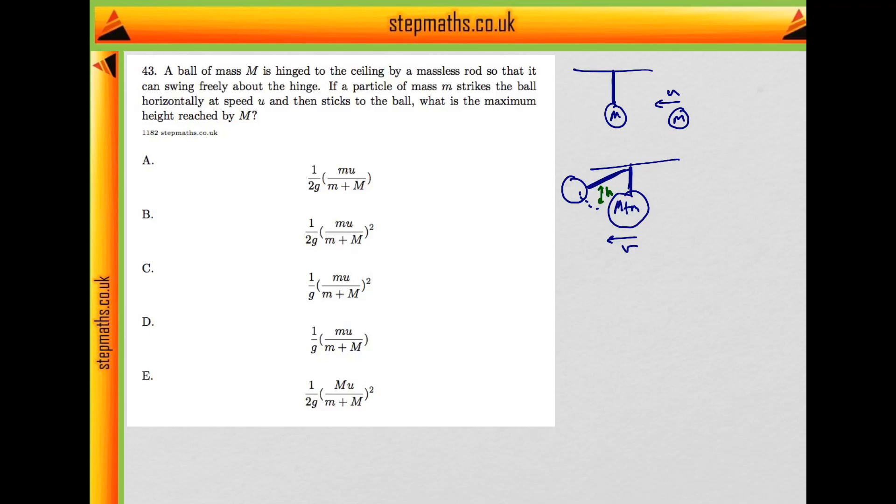So let's first find v. By conservation of momentum, the momentum before mu must equal the momentum after, m plus little m times v. That tells us that the speed they're going to move off at will be mu over capital M plus little m.